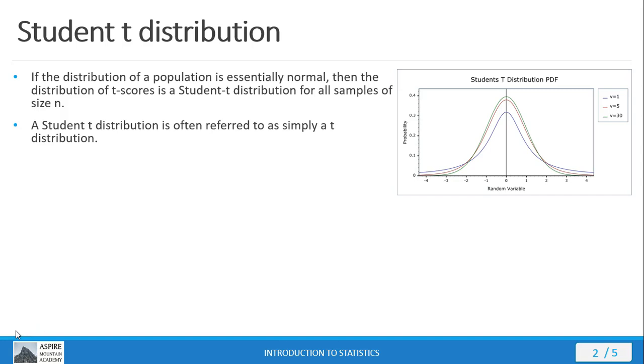The advantage of the student t-distribution is that it's like a normal distribution, but it can accommodate much smaller sample sizes. So before we were talking about the central limit theorem and how we said you need to have more than 30 in your sample size in order to approximate the normal distribution, well, the student t-distribution can accommodate smaller sample sizes.